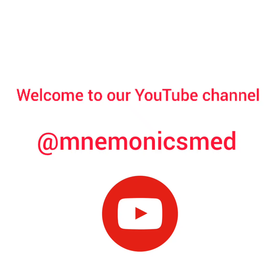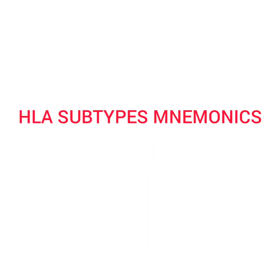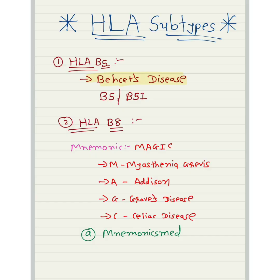Hello guys, welcome to our YouTube channel Mnemonics Made Easy. We will learn about HLA subtypes mnemonics. First we will learn about HLA-B5 — it is Behçet's disease. You have to remember B5 or B51 for Behçet's disease.